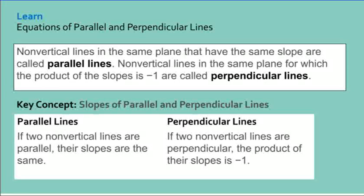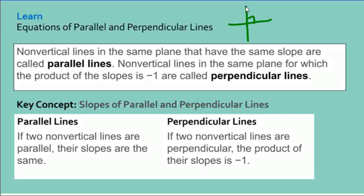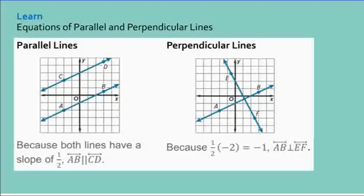The last part for today is equations of parallel and perpendicular lines. Non-vertical lines in the same plane with the same slope are parallel lines — they never cross. Non-vertical lines whose slopes have a product of negative 1 are called perpendicular lines, meaning they cross at a right angle. Perpendicular lines have negative reciprocal slopes — for example, one half and negative 2 are negative reciprocals.